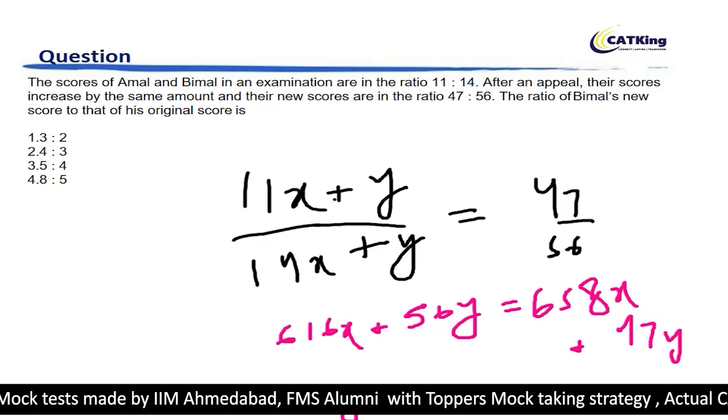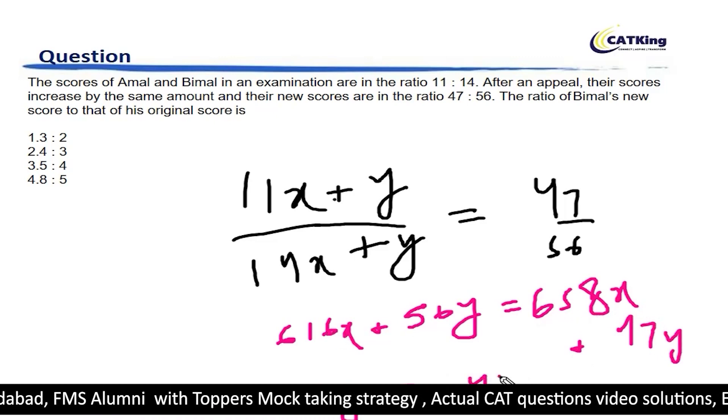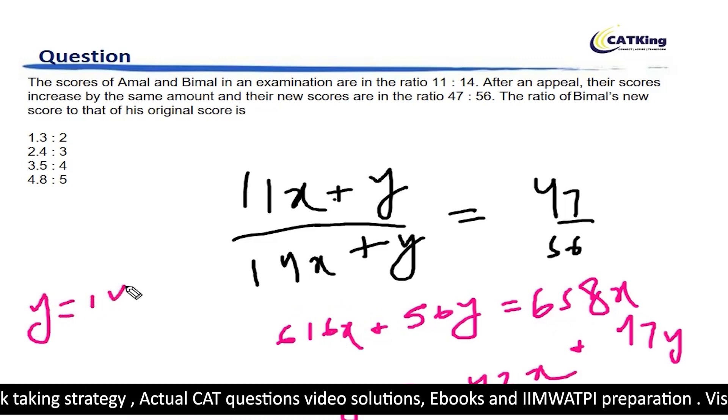If we subtract, this becomes 42x. So 9y equals 42x, and y becomes 14x upon 3.